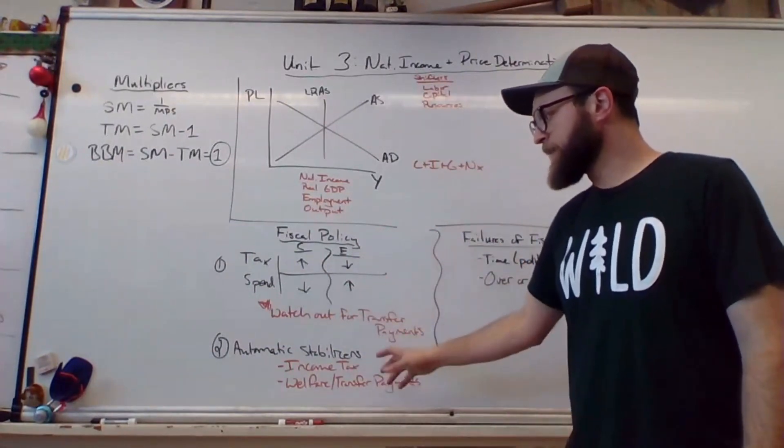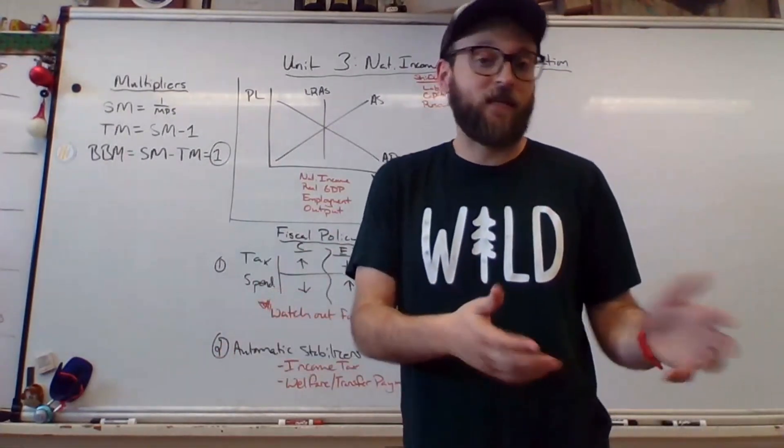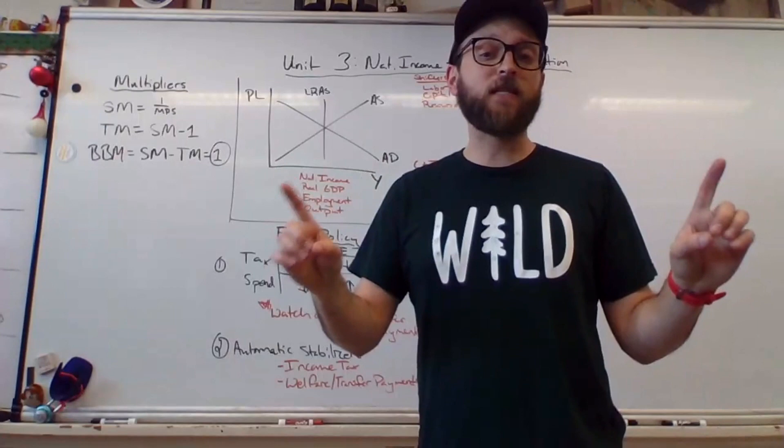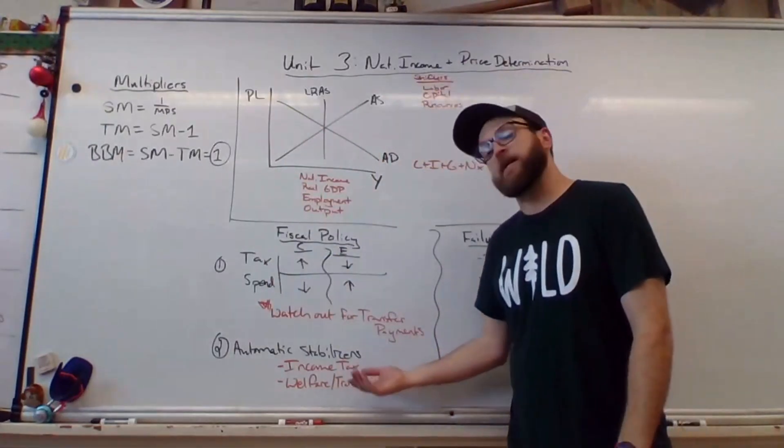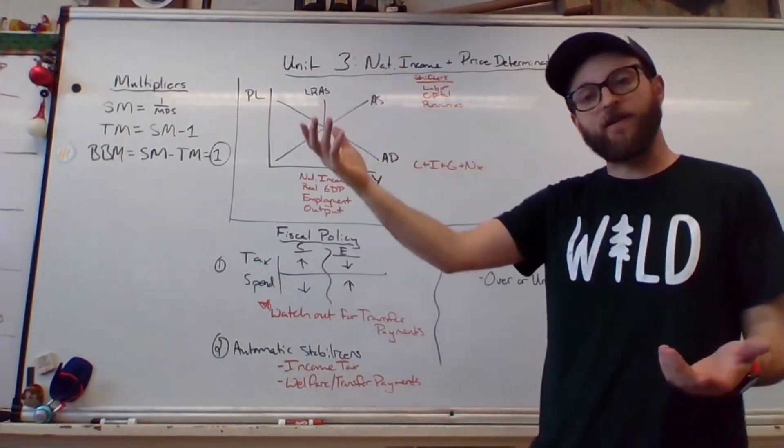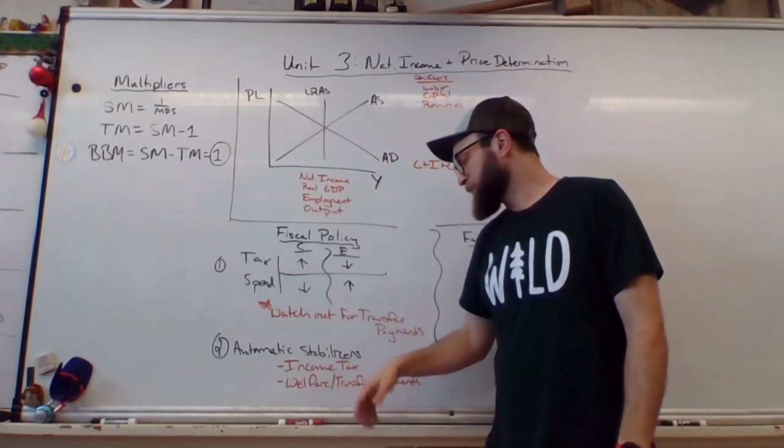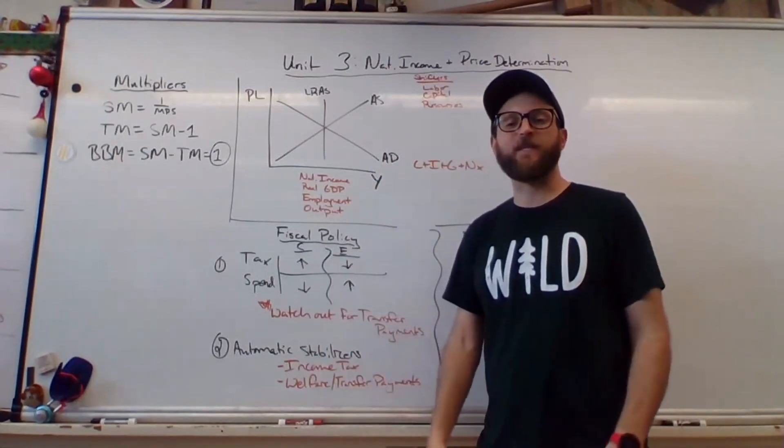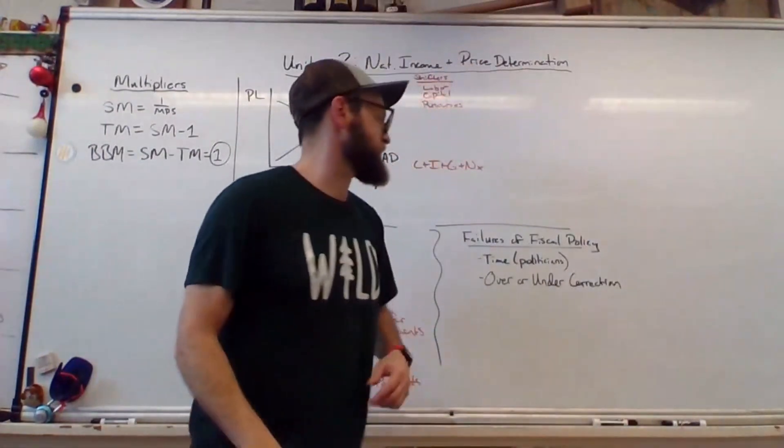The second flavor would be automatic stabilizers, which are not new things, they're pre-existing. That's what you want to watch out for. If they're automatic stabilizers, they already existed. So an example would be our income tax system. The more wealth you have, the higher percentage of tax you pay, in theory, although you probably... never mind. And then the other option would be welfare programs, transfer payments that are pre-existing, not currently in space or time. That was a weird exception.